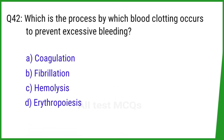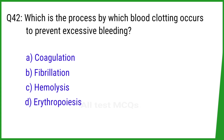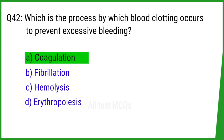Question number 42. Which is the process by which blood clotting occurs to prevent excessive bleeding? The right answer is option A: Coagulation.